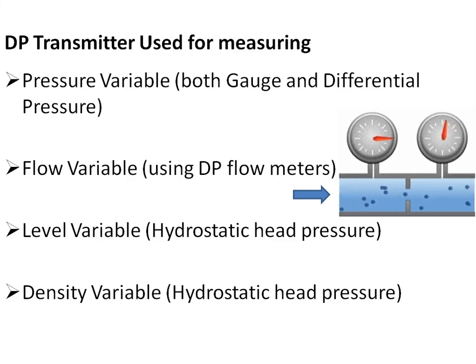The DP transmitter is also used for the measurement of the level variable and the density variable.